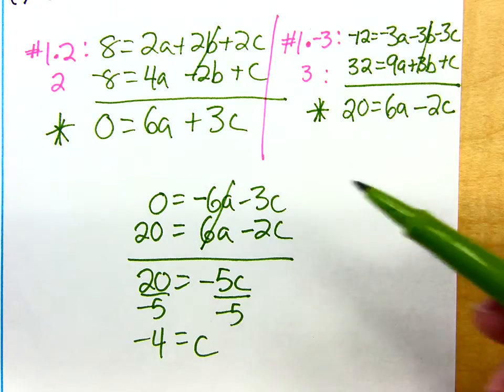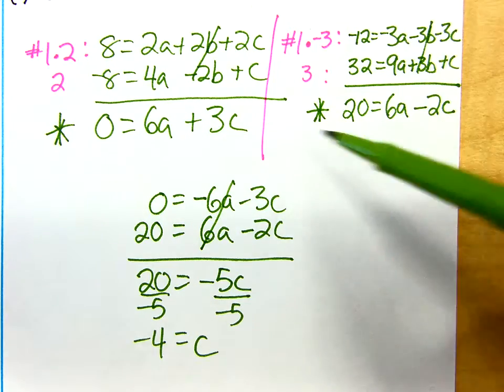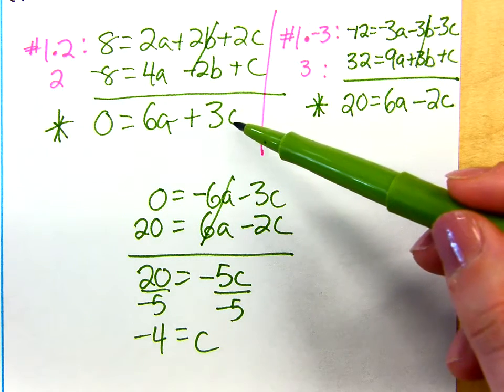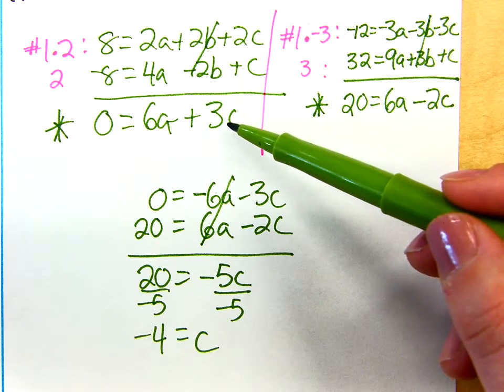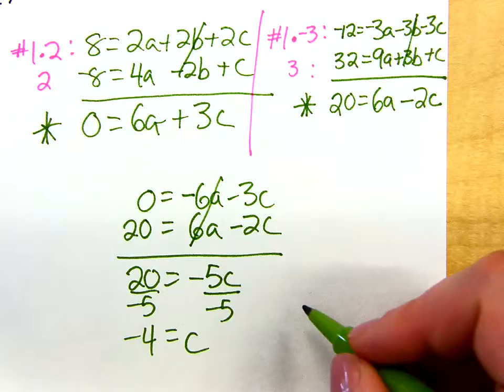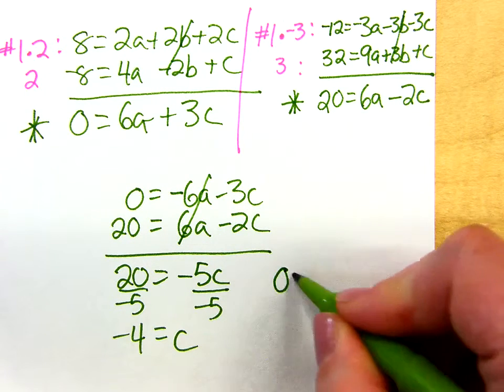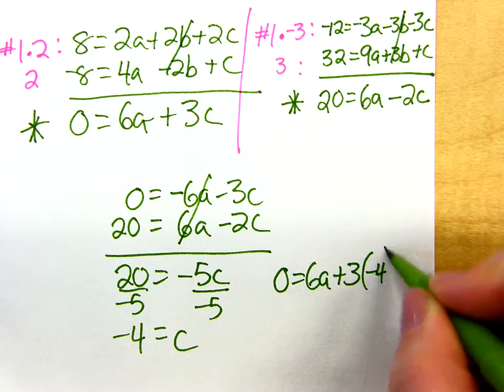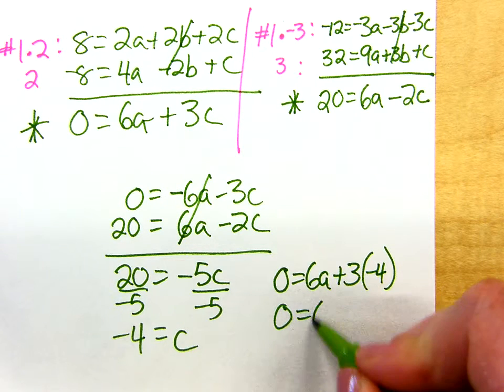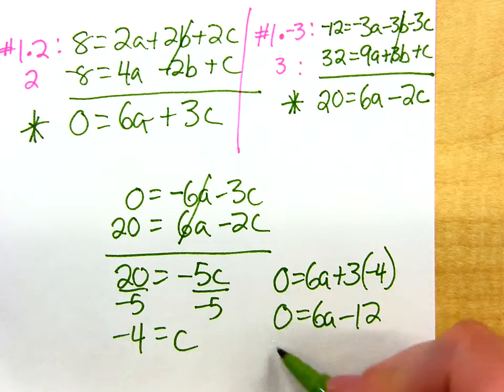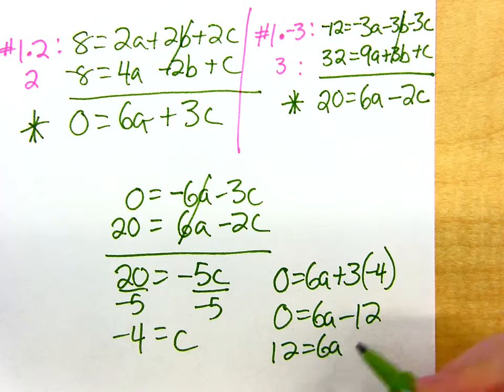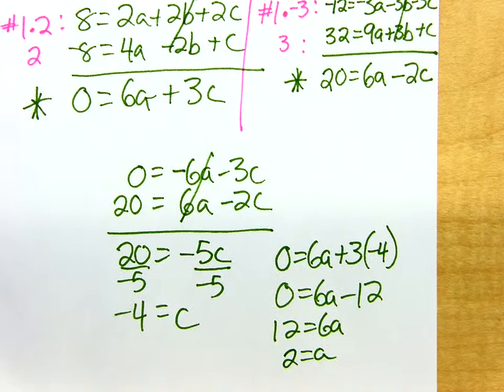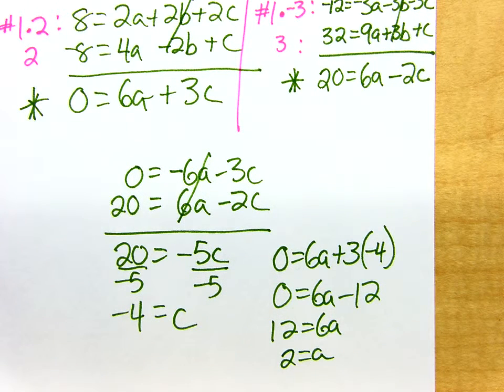Right. Go back to either one of your starred equations. It doesn't even matter. I'll pick this one because the numbers are smaller. Plug in negative 4 there, and now I can solve for a. Did you get 2 for a?